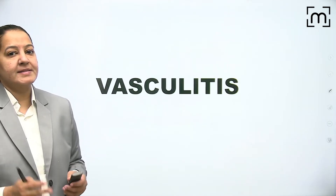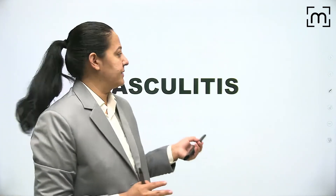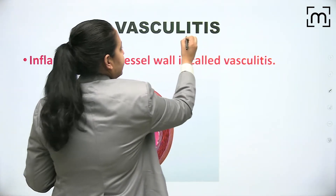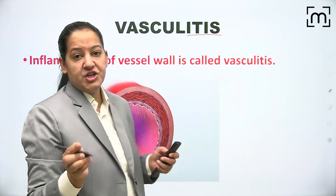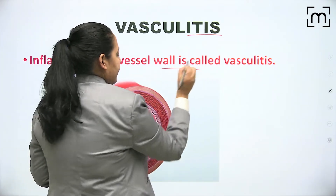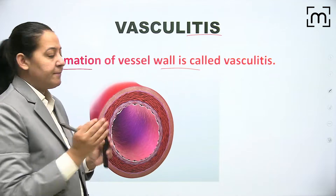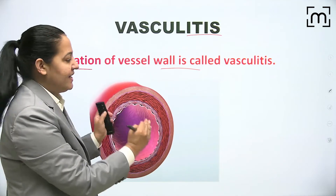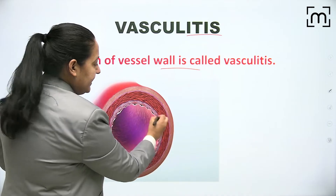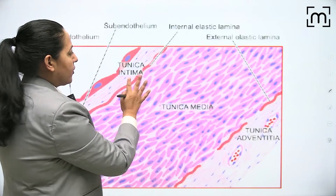In this session I will be discussing vasculitis. As the name indicates, vasculitis - 'itis' is the inflammation of the blood vessel wall. In the wall of the blood vessel there are three layers: intima, media, and adventitia. If inflammation is occurring in these three layers, it is known as vasculitis.